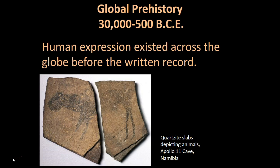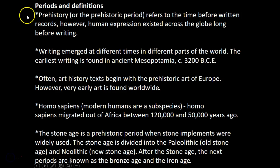A glacial period produced European ice ages. Saharan agriculture grassland became desert, and tectonic shifts in Southeast Asia created land bridges between the continents and the now-islands of the Pacific south of the equator. Human behavior and expression was influenced by the changing environments in which these prehistoric people lived. Writing emerged at different times in different parts of the world — the earliest writing is found in ancient Mesopotamia, which we will look at later in this course.